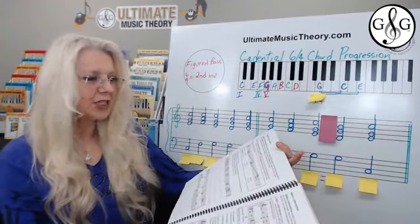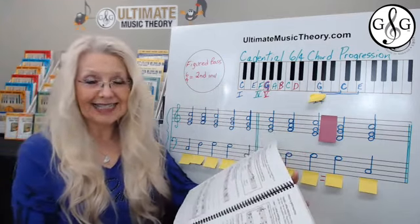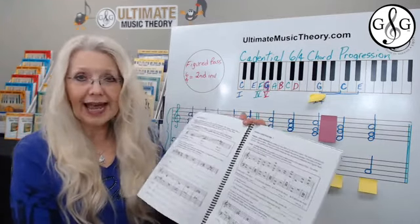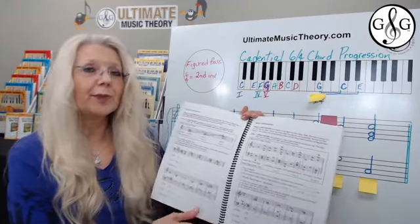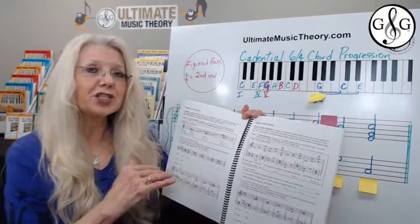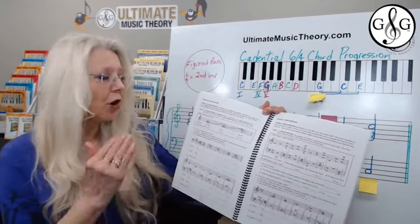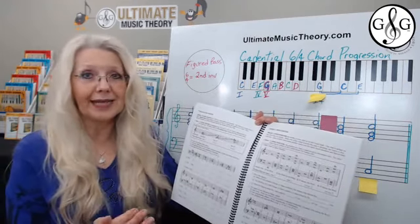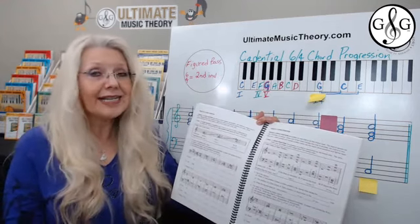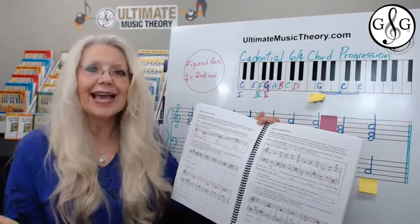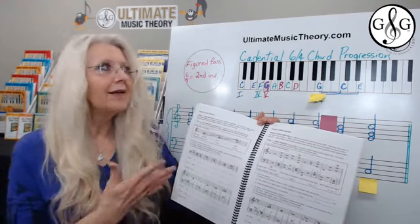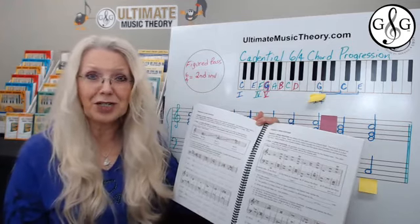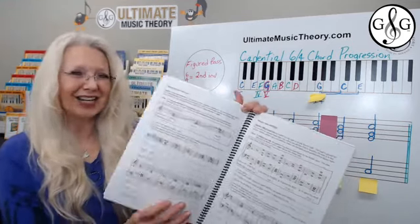Inside the Advanced Rudiments Workbook in the Ultimate Music Theory series, we're flipping over to page 56 where students are learning about triads, close position, open position, and figured bass. We're going to take a look at what figured bass is and how it plays into the cadential 6-4 chord progression.